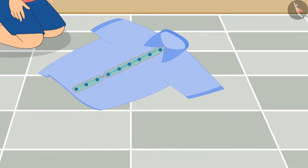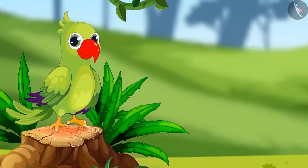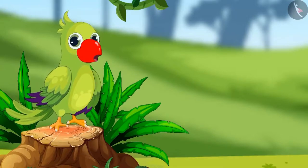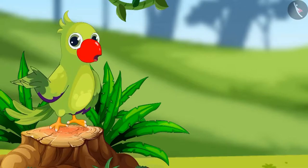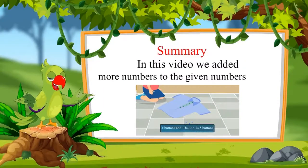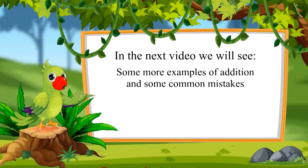Now, what is the total number of buttons stitched on his shirt? Yes — nine buttons. So children, I hope you had fun seeing the examples of addition. You too should look at things around you and try to add numbers to find the total number. That's it for today. In this video, we saw examples of addition in which we added more numbers to the given numbers. In the next video, we will see some more examples of addition and some common mistakes. Till then, goodbye friends.